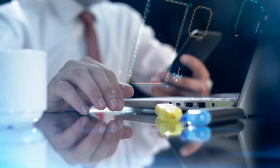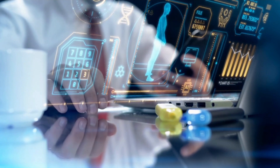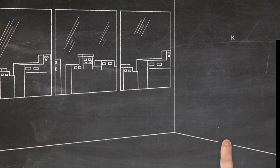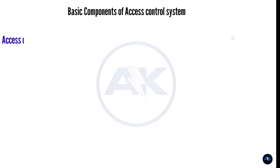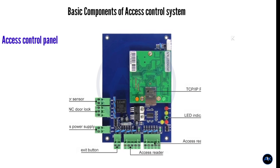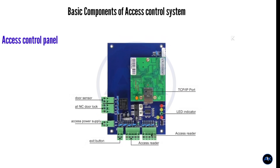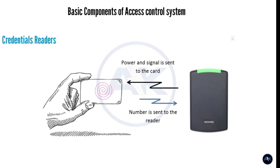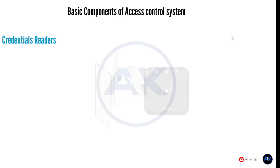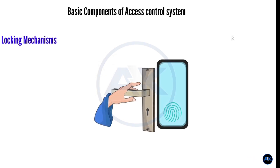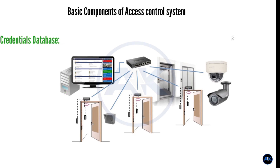How does an Access Control System work? An Access Control System is a security solution that allows authorized individuals to gain entry to specific areas or buildings while restricting access to unauthorized individuals. It is commonly used in office buildings, hospitals, government facilities, and other high-security environments. The basic components include the Access Control Panel, which is the central control unit that manages all connected devices and makes decisions about whether to grant or deny access based on pre-defined rules and permissions. Credential readers are used to identify individuals — common types include keypads, proximity card readers, and biometric scanners. The locking mechanism controls the physical locks on doors and gates. The credential database stores information about authorized individuals and their access permissions, and is used by the Access Control Panel to verify credentials during the authorization process.